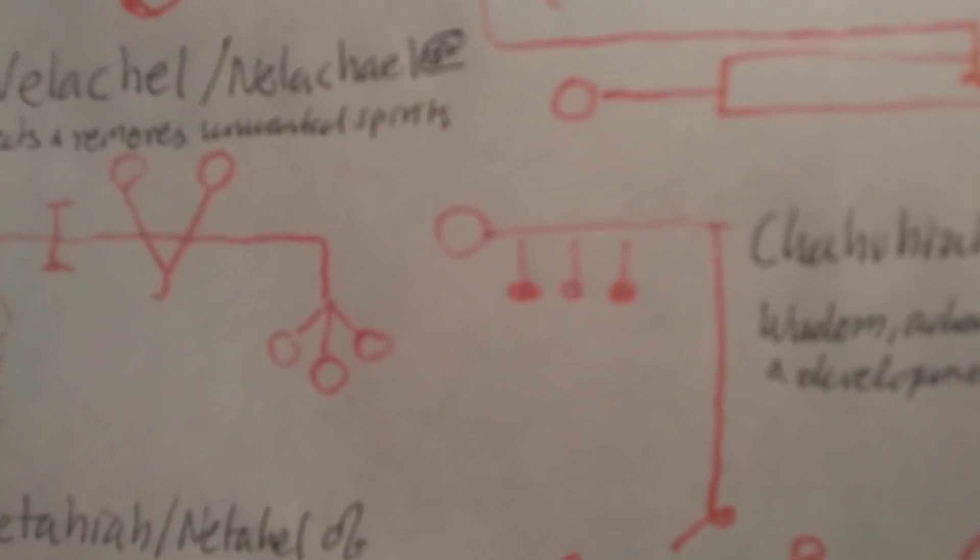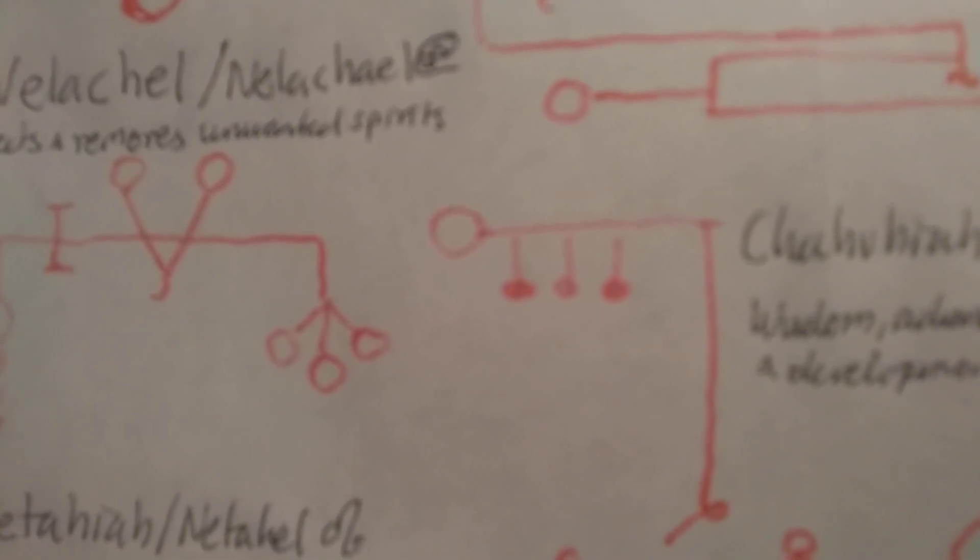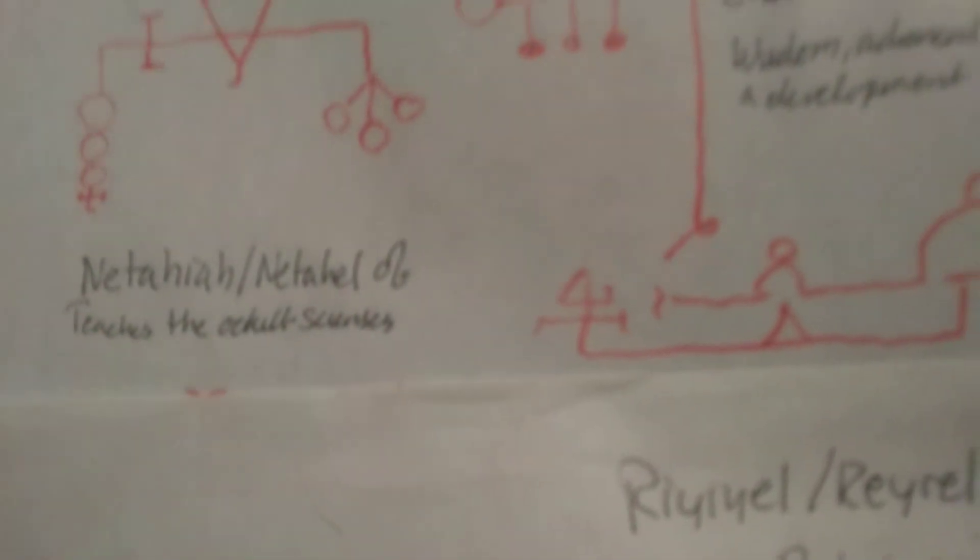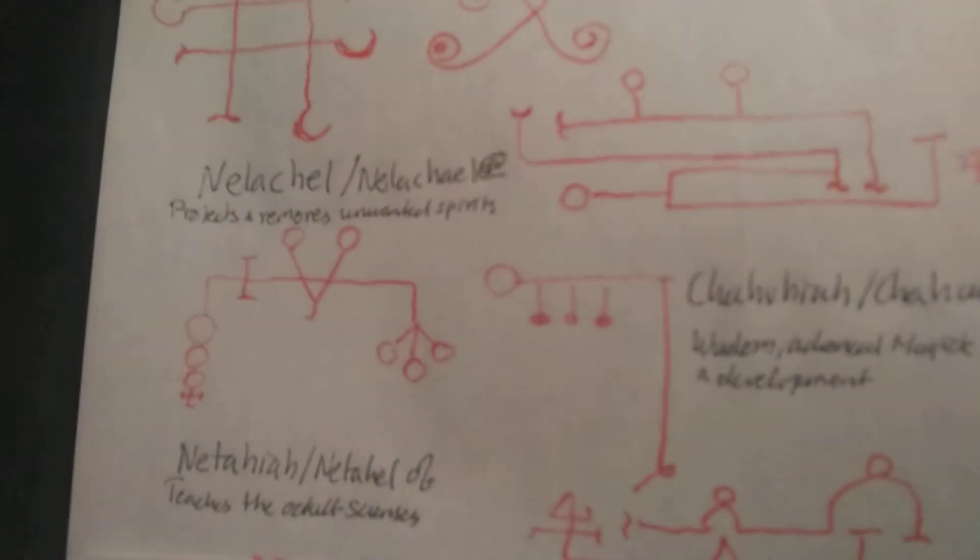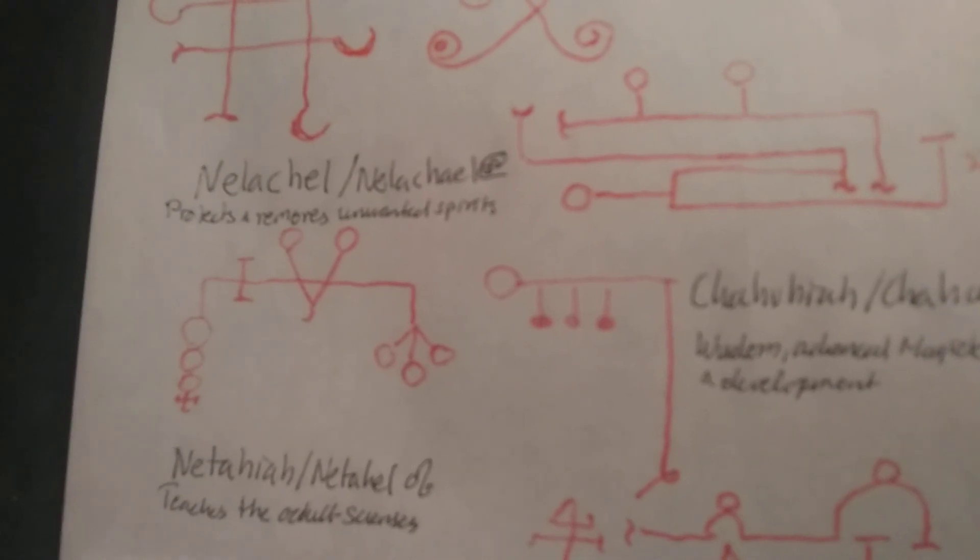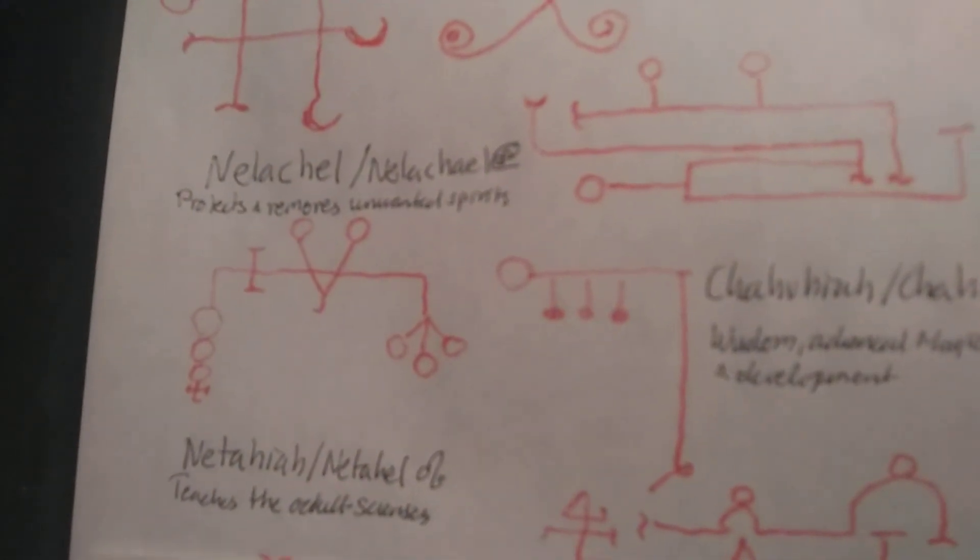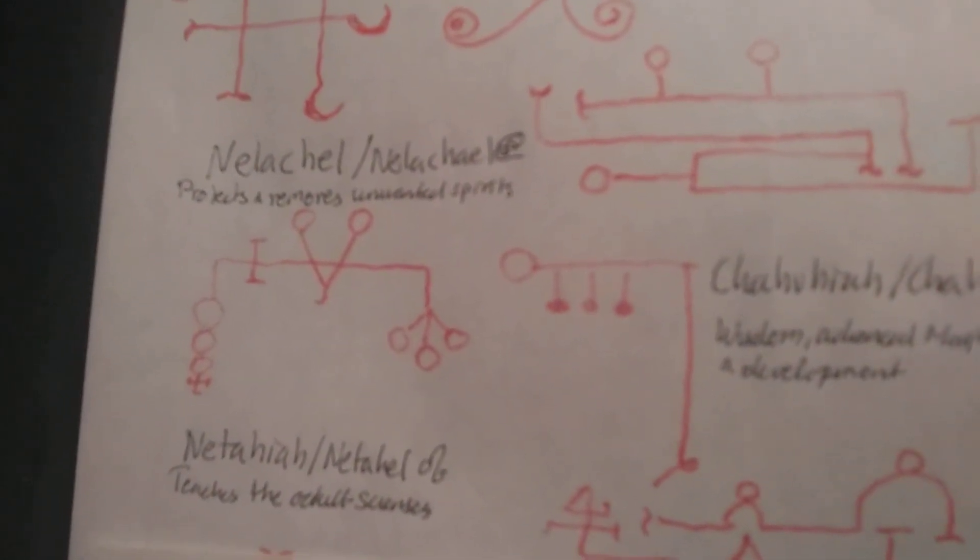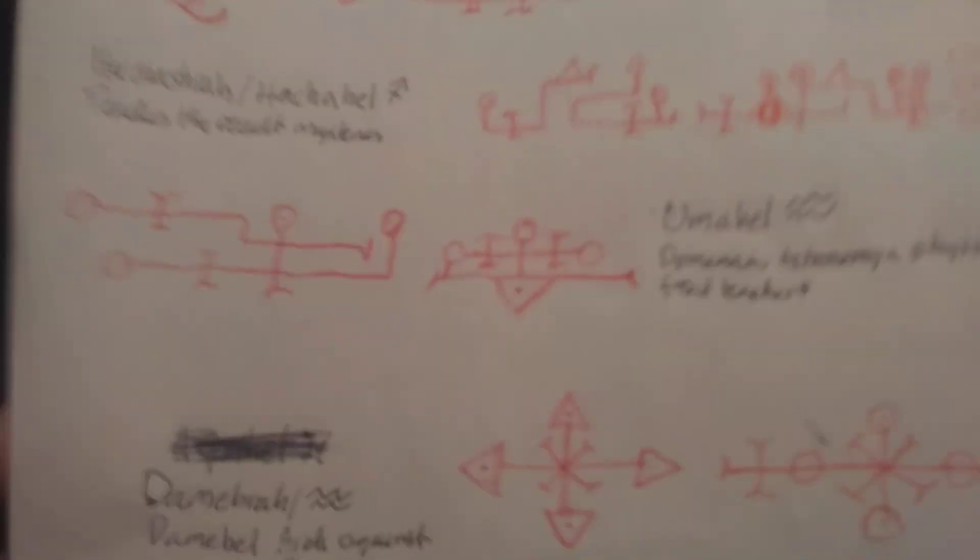Then we have Nethahia or Netahel, who teaches the occult sciences. And Rijiel, who protects against evil spirits. He is in Leo, and Nethahia was in Leo, and Chahuea was in Cancer.